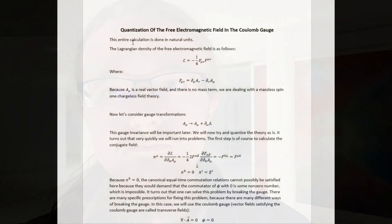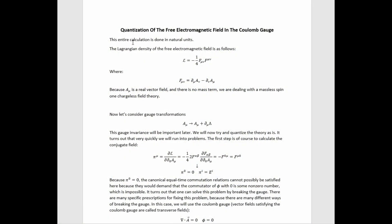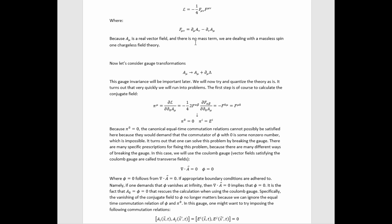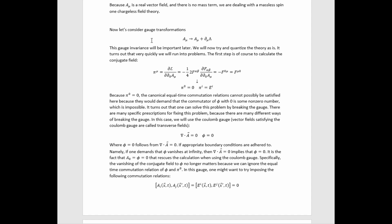This entire calculation is done in natural units. The Lagrangian density for a free electromagnetic field is just this — it's very familiar — where F_μν is the electromagnetic field strength tensor given by this formula in terms of the four-dimensional vector potential. Because A_μ is a real vector field with no mass term, we are dealing with a massless spin-1 chargeless field theory. Remember that this has a U(1) gauge invariance that looks like this.